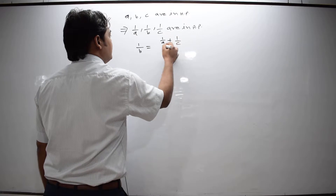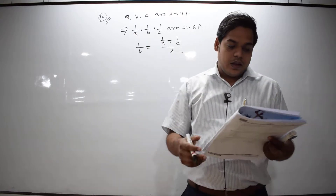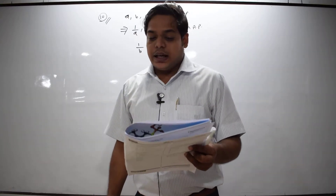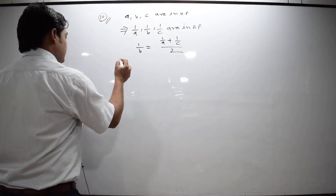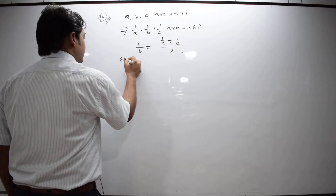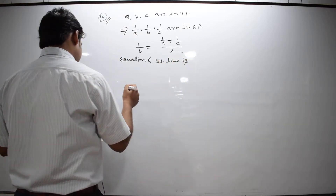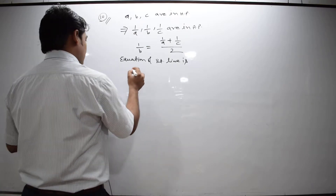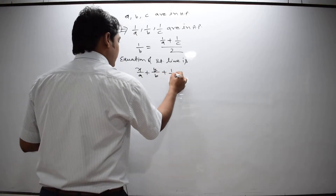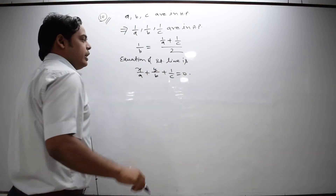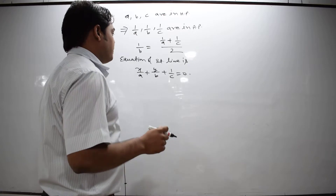If they are in AP, it means that 1/B equals (1/A + 1/C) divided by 2. Directly one can find this result. It is also given that the straight line always passes through a fixed point. The equation of the straight line is x/A + y/B + 1/C = 0. Our aim is to find through which fixed point this straight line always passes.